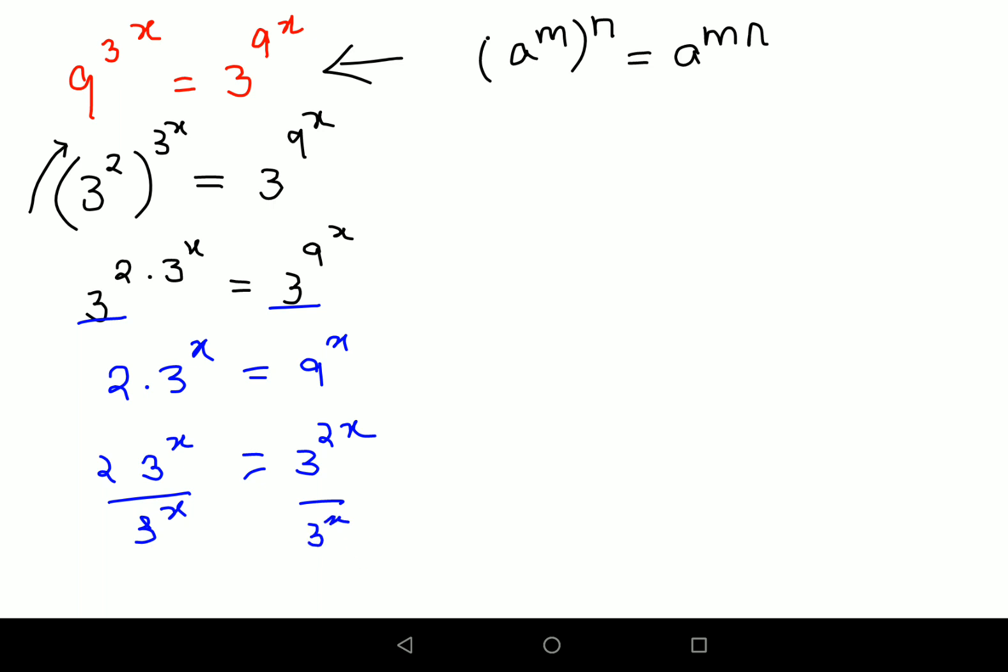So this is canceling, and I can say that 2 equals 3 raised to 2x minus x. I can take this on top; when I do that, the indices get subtracted because the bases are same. Please remember, if the bases were not same, we can't do this.